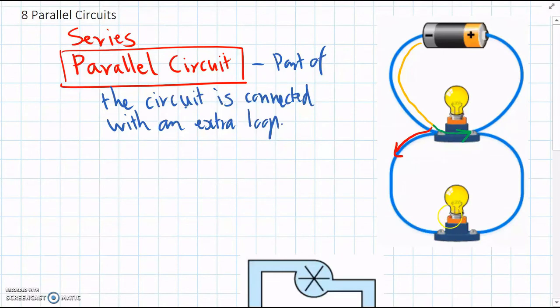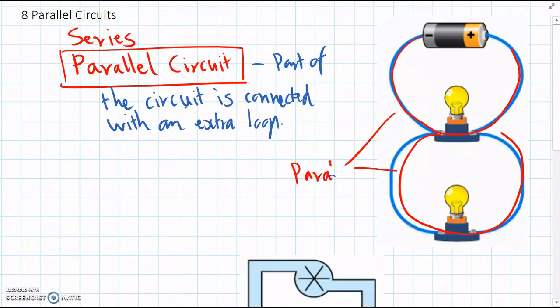And the two different sections here, the two different loops, so one and two loops, these are called the parallel sections. Just like two parallel lines.